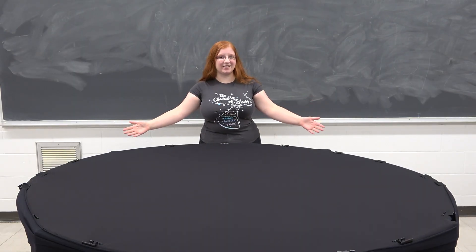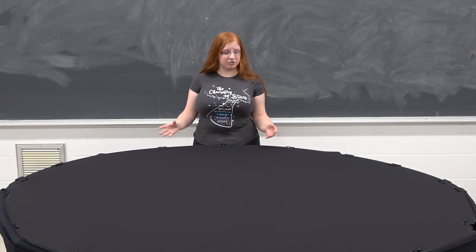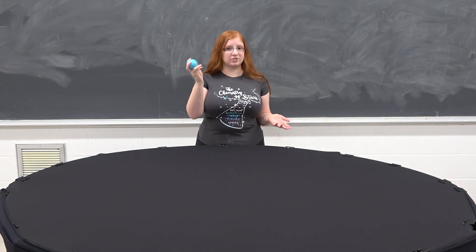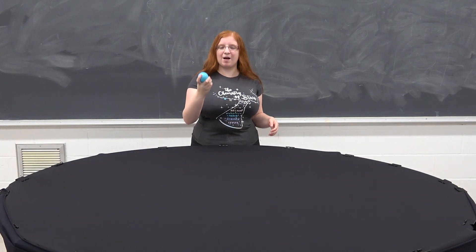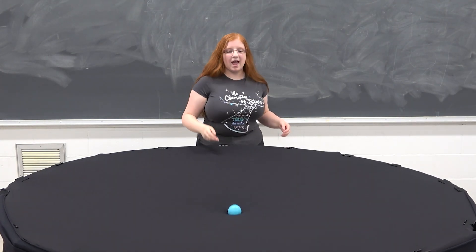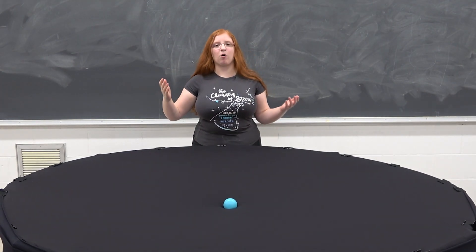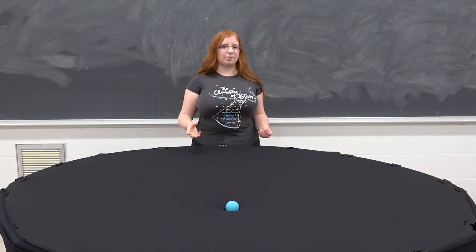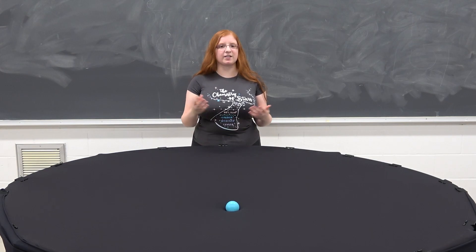Here I have my gravity table. To help demonstrate how this shows gravity, here I have this ball. Let's say that this ball is a star and plop it right in the middle of our fabric of space and time. As you can see, it creates something that's called a gravity well. A gravity well is a semi-physical representation of the effects of gravity.